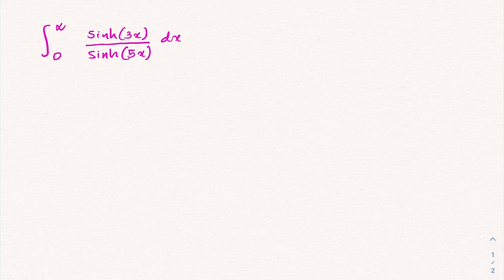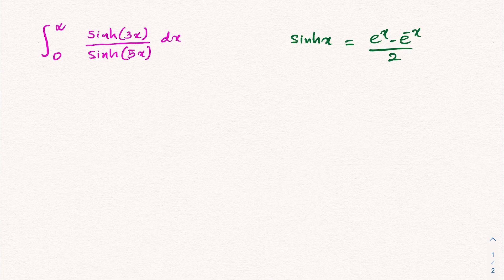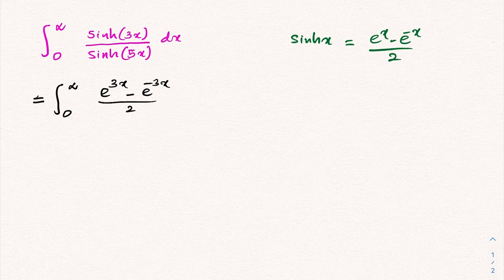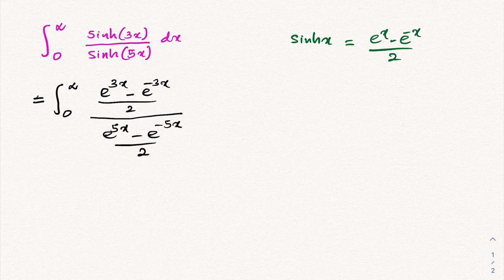First, we know hyperbolic sine of x is equal to (e^x minus e^(-x)) over 2. So we can plug in: our integral is equal to the integral from 0 to infinity of (e^(3x) minus e^(-3x)) over 2, divided by (e^(5x) minus e^(-5x)) over 2, dx. The two factors cancel.